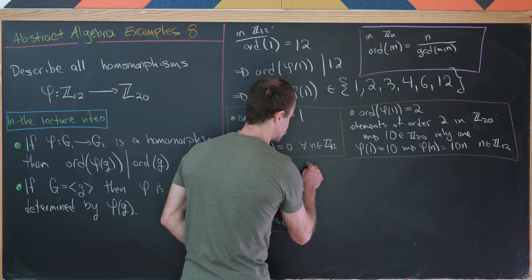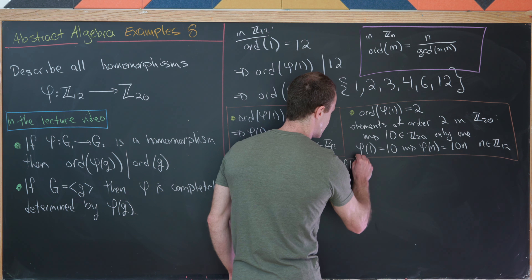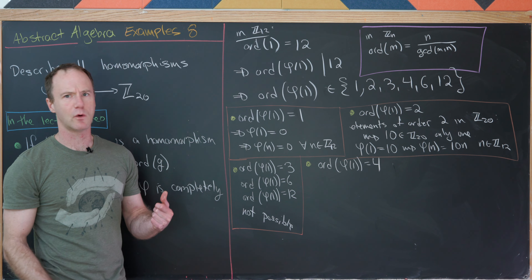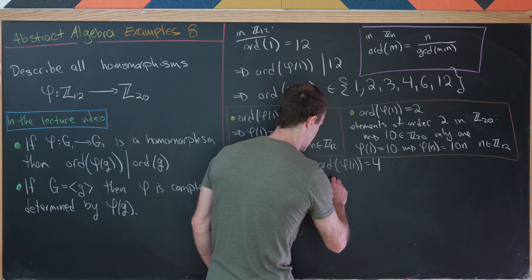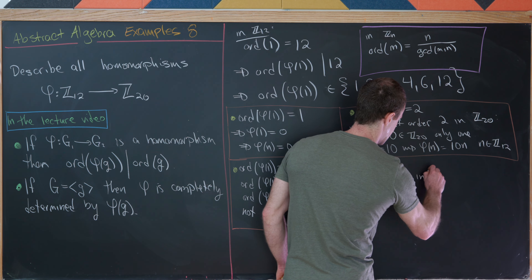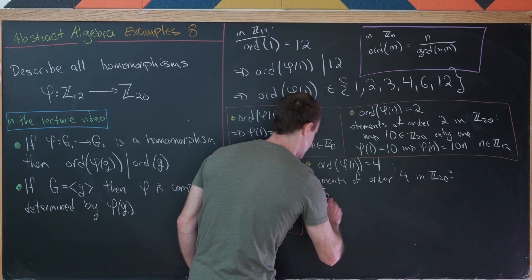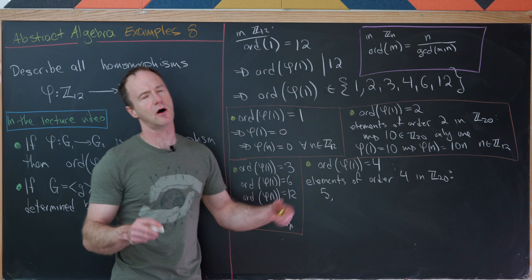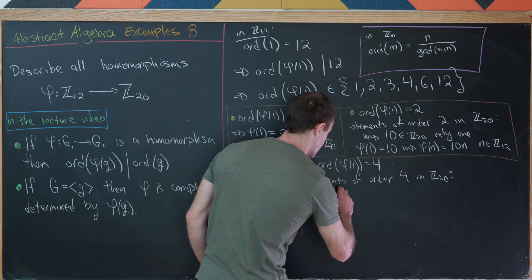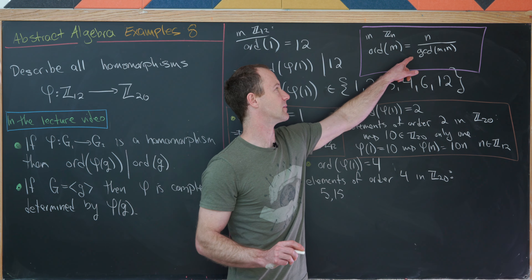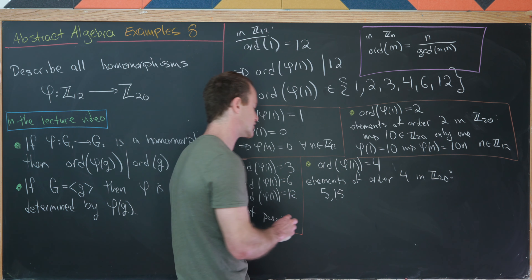That brings us to our last possible case: what happens if the order of φ(1) equals 4. We want to look for elements of order 4 within Z20. It's clear that 5 is an element of order 4 by the formula, and also just because 5+5+5+5 = 0. And 15 will be the only other one, since it's the only other number in Z20 whose GCD with 20 is 5. So that gives us two possibilities.